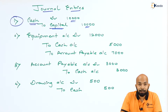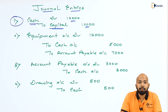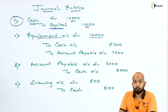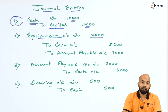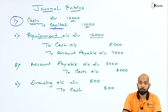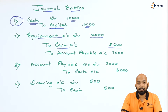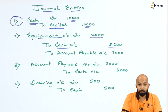Recollecting the second entry: equipment worth ₹12,000 was purchased — an asset coming in. Equipment Account is debited for ₹12,000. Since ₹5,000 was paid in cash, Cash Account is credited. The remaining ₹7,000 creates a liability, so Accounts Payable is also credited for ₹7,000. The rule followed is: debit what comes in, credit what goes out.